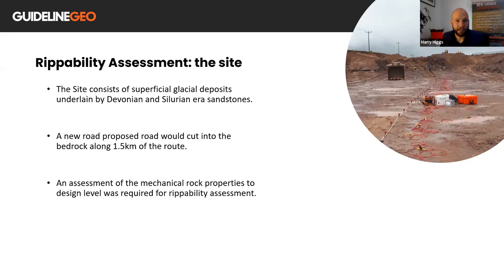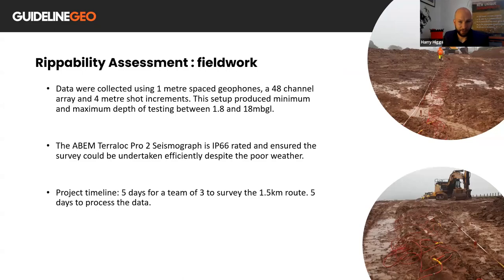Excavation had already begun, so some of the survey was directly onto bedrock, as shown in this photo. Data were collected using 1-meter spaced geophones. We used a 48-channel array with 4-meter shot increments. This setup produced a minimum and maximum testing depth of approximately 1.8 meters minimum and 18 meters maximum. The TerraLock Pro 2 seismograph is IP66 rated, and that ensured that the survey can be undertaken efficiently, despite the foul weather. And the project timeline for a team of three to survey this 1.5-kilometer route took five days.